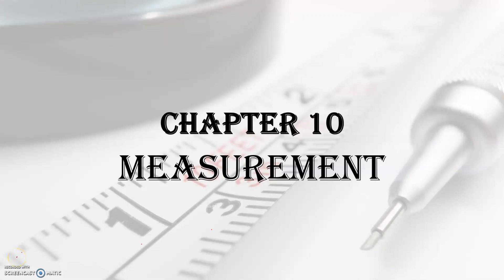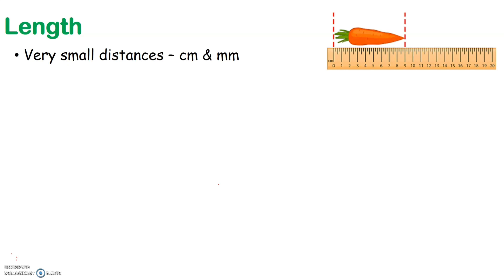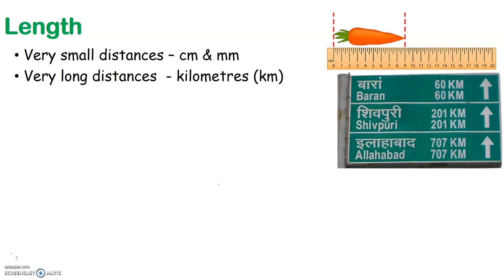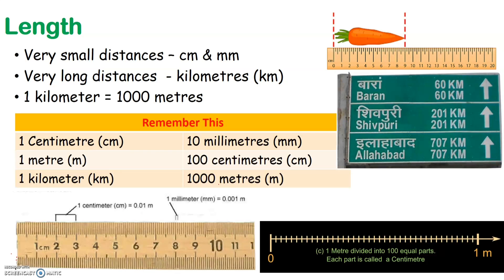Hello dear children. Welcome back to science class. We have learned in our last class about length and the various units in which we can measure it. Length can be measured in centimeter, millimeter, meter, and kilometer. We use centimeter and millimeter to measure small distances while long distances can be measured in kilometers. We have also learned that 1 centimeter is equal to 10 millimeters, 1 meter is equal to 100 centimeters, and 1 kilometer is equal to 1000 meters.